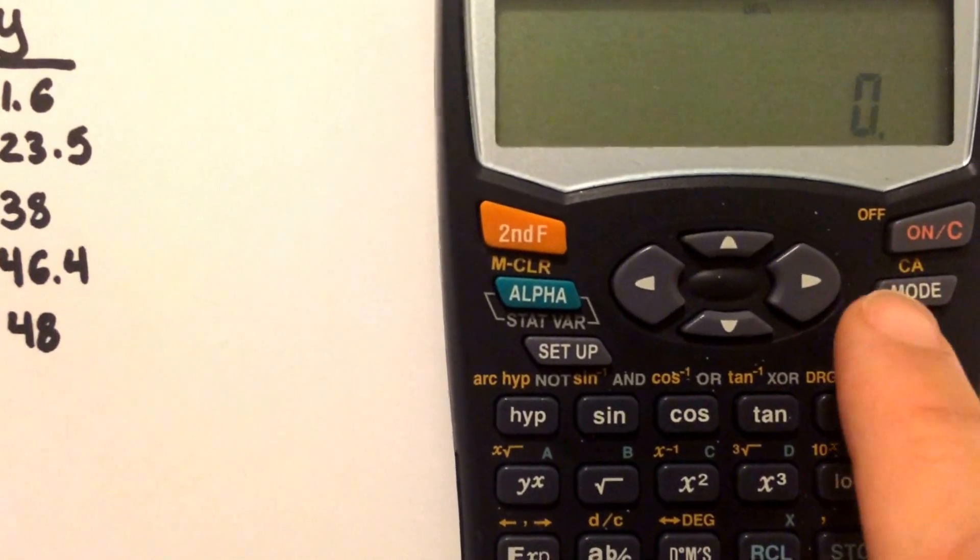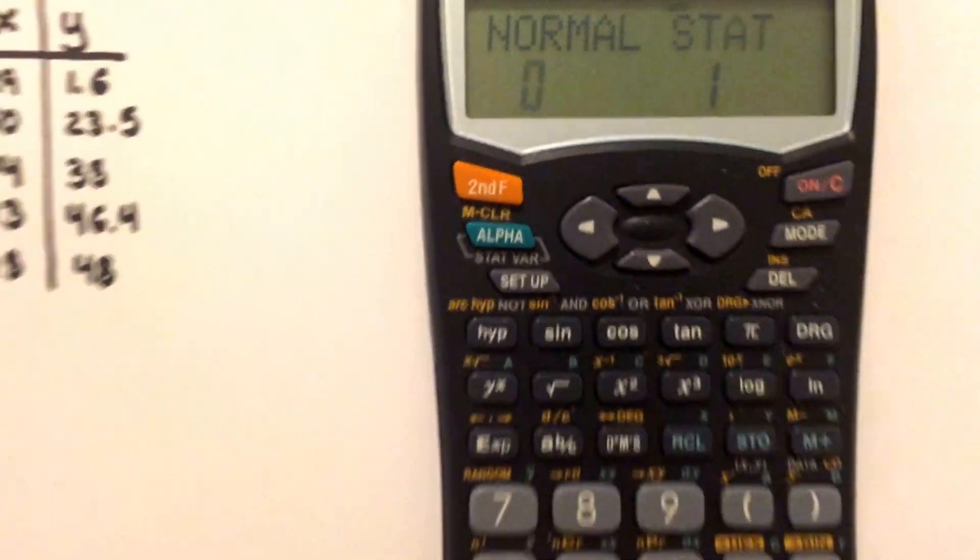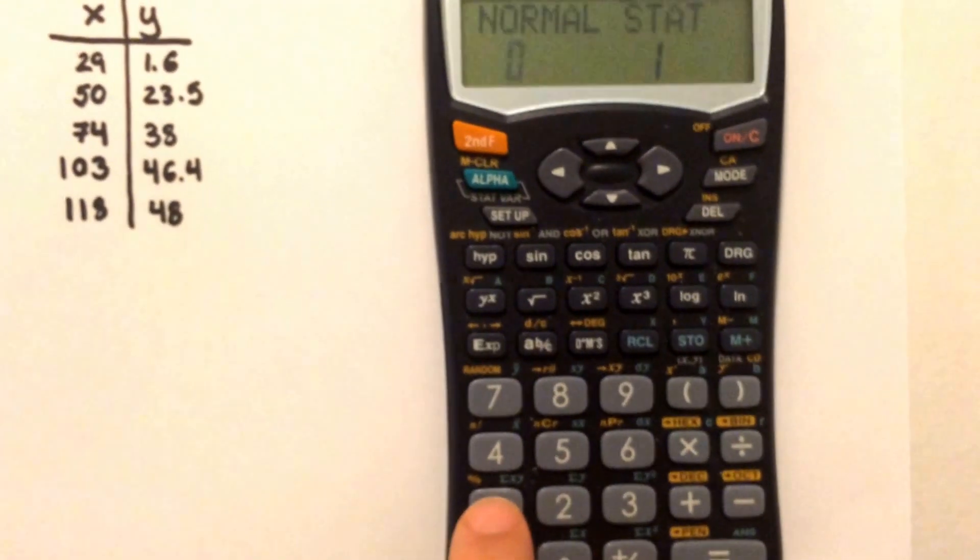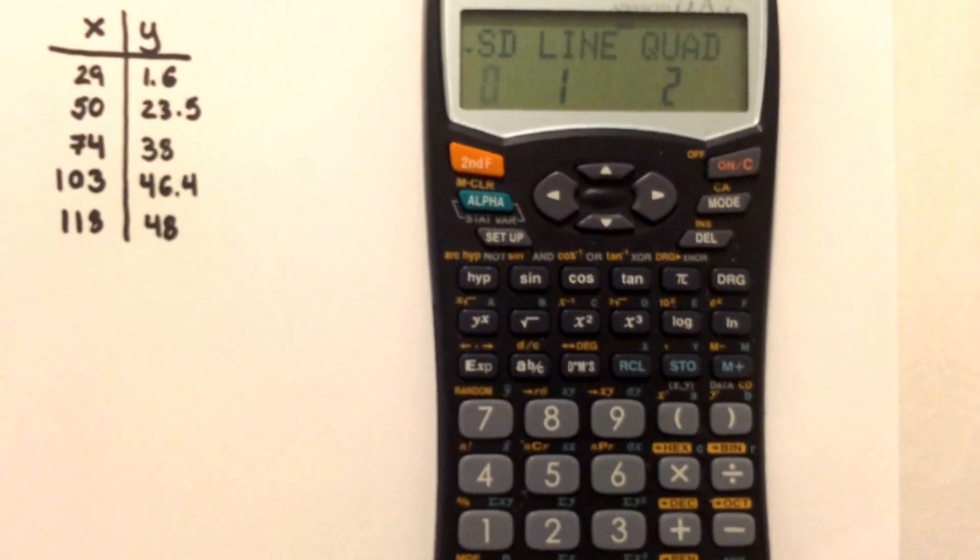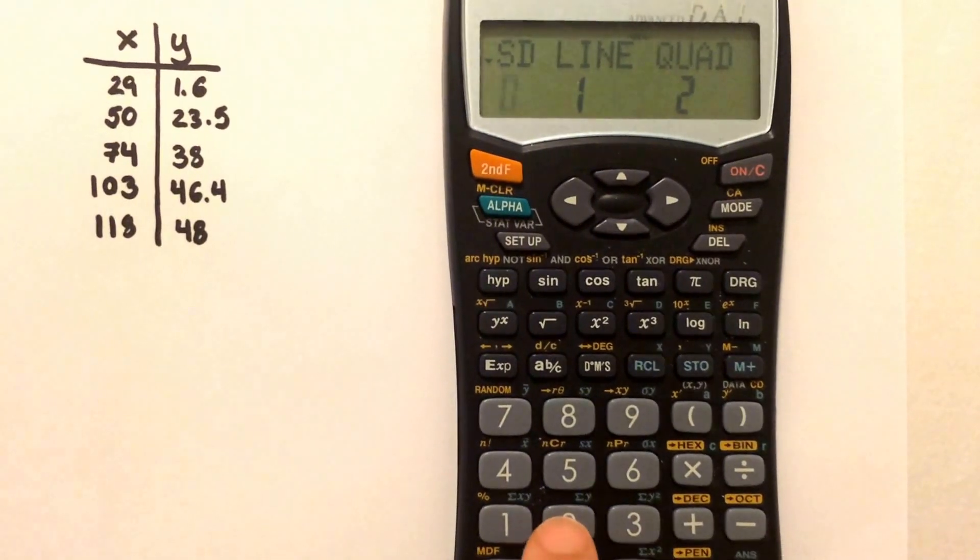Now you're going to go back to mode, select 1 for stats, and since we're doing a quadratic regression, you're going to select 2.